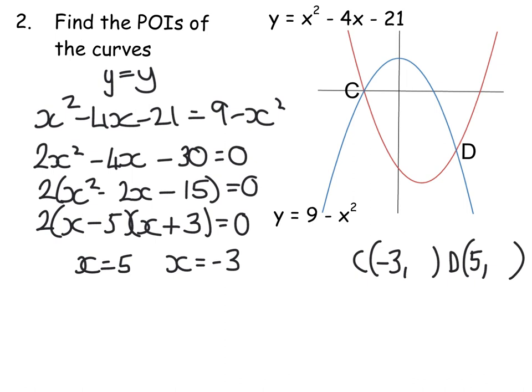So once you know what x is, you sub it into your equation. I'm going to sub it into probably the easier one, the 9 minus x squared. So y is going to be 9 minus 5 squared in this case, which is 9 minus 25, which will give me minus 16. And that means that the 5-coordinate was 5 minus 16, so D was 5 minus 16.